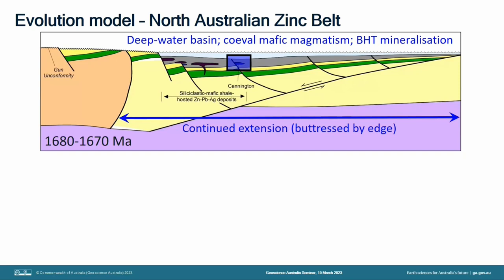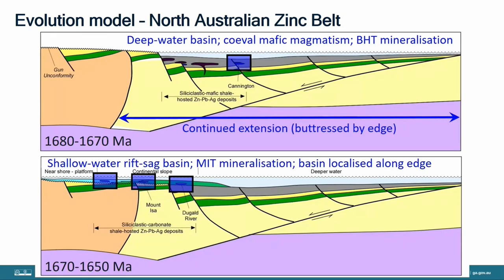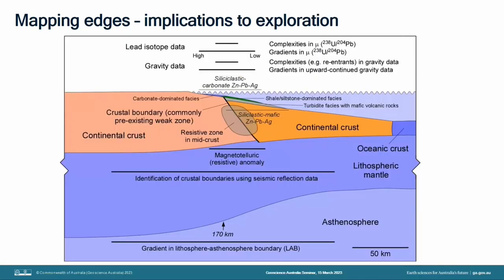So you have deep water basin, coeval mafic magmatism, and BHT mineralization — again controlled by the buttress of the Rufus Fault. Continuing on, you eventually go to the sag phase of basin development. You start to form the shallow-water sag-hosted deposits — the Mount Isa type mineralization. Again, the basin is going to be localized along that edge, so the edge is actually controlling the sedimentation and therefore the mineralization. We can use these data and these concepts to actually produce exploration indicators and determine how far those indicators extend.